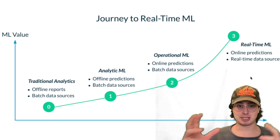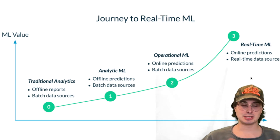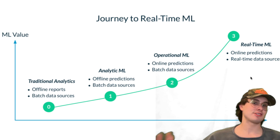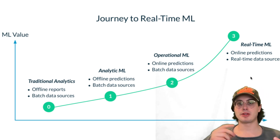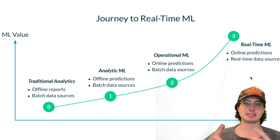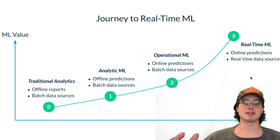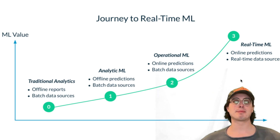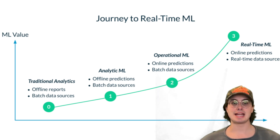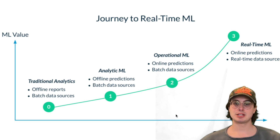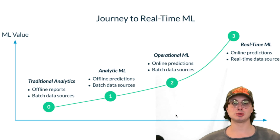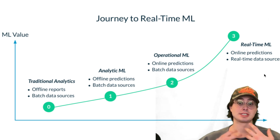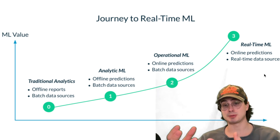Especially in areas like customer expectations — users are expecting immediate feedback, whether it's order tracking, financial transactions, identifying fraud, or serving personalized recommendations to shoppers on Amazon. You need to be able to serve real-time responses to them, including real-time machine learning responses.